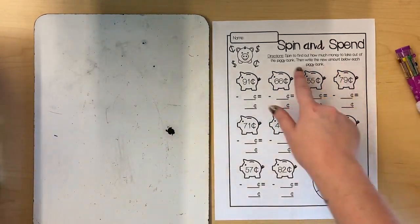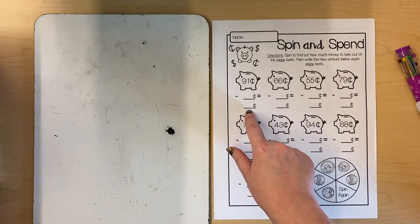You're gonna spin to find out how much money to take out of each piggy bank and then write the new amount below the piggy bank.